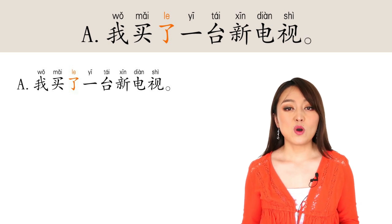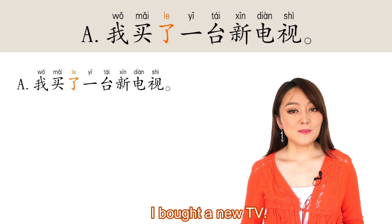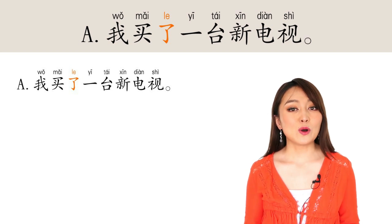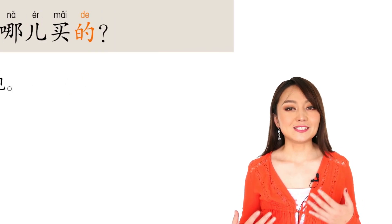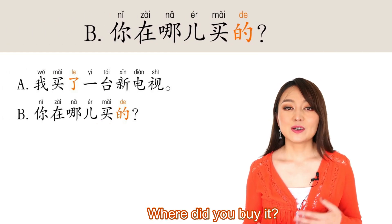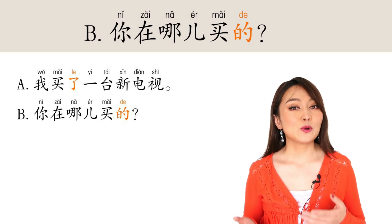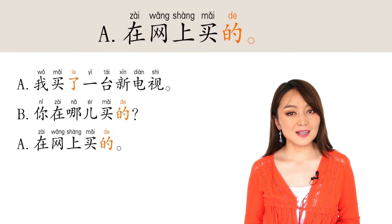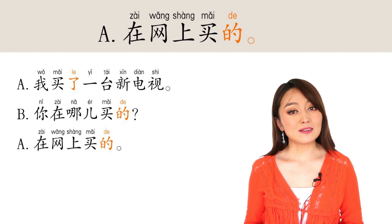Another example. A says: 我买了一台新电视 — I bought a new TV. To start the conversation, we use 了 to tell what happened. And B says: 你在哪儿买的? — Where did you buy it? Now it's asking where, so we use 得. A answers: 在网上买的 — I bought it online. Still 得.